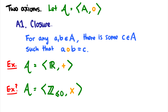The first axiom is closure. This says for any two elements in A, there is some C such that when you take two elements and use the operation on them you get C, and all those elements are in the set. So if I take two things in A and use an operation, I better get something also in A. For example, with the real numbers and addition: 3 and 2 are real numbers, 3 + 2 = 5, and 5 is also a real number. Therefore the real numbers are closed under addition.